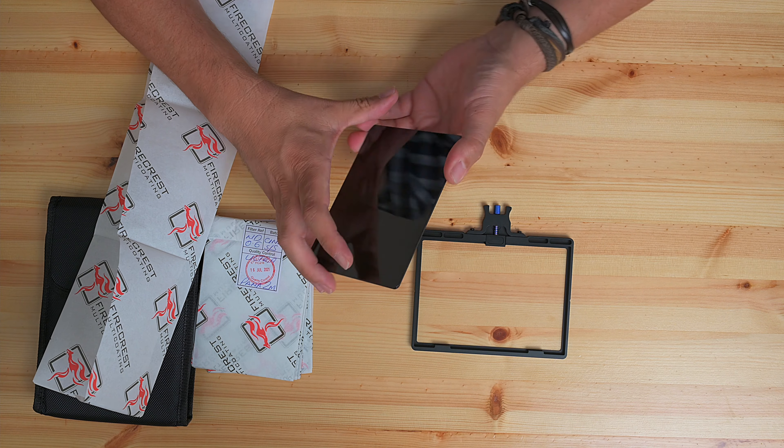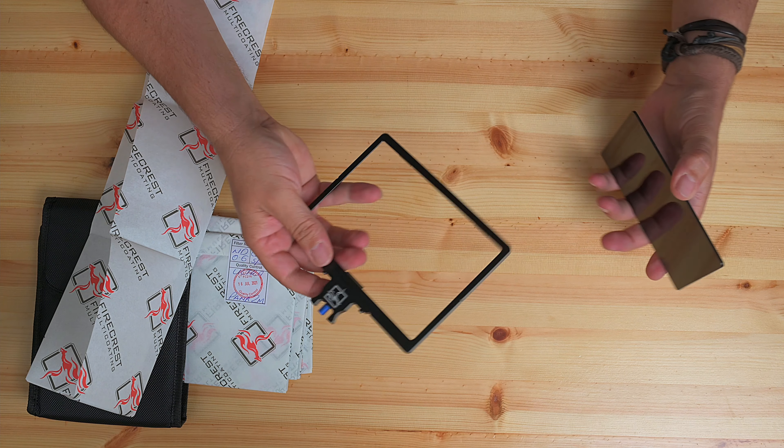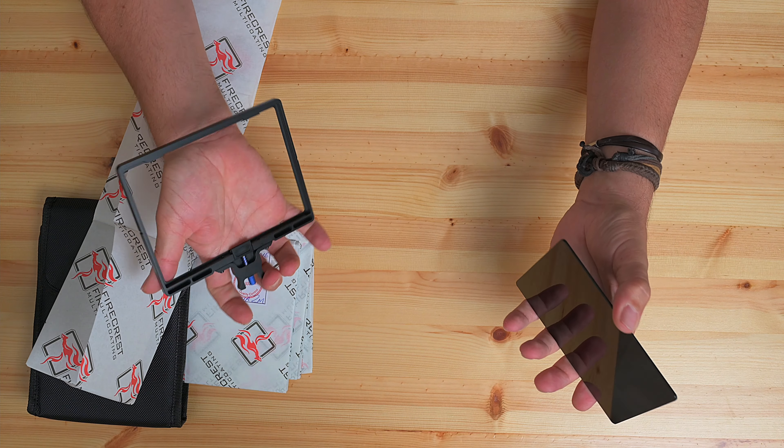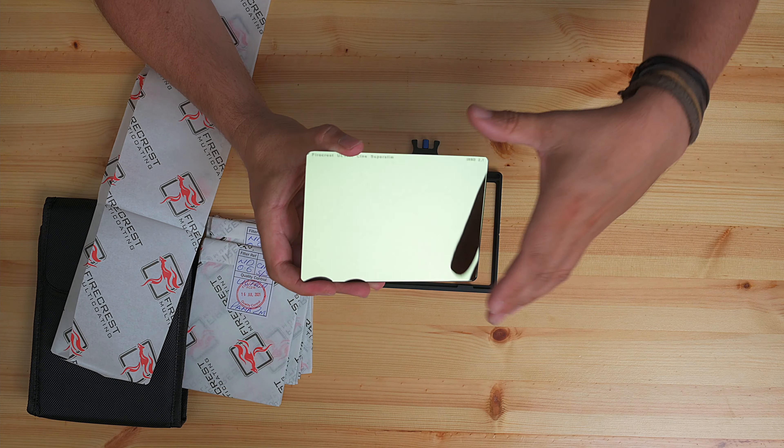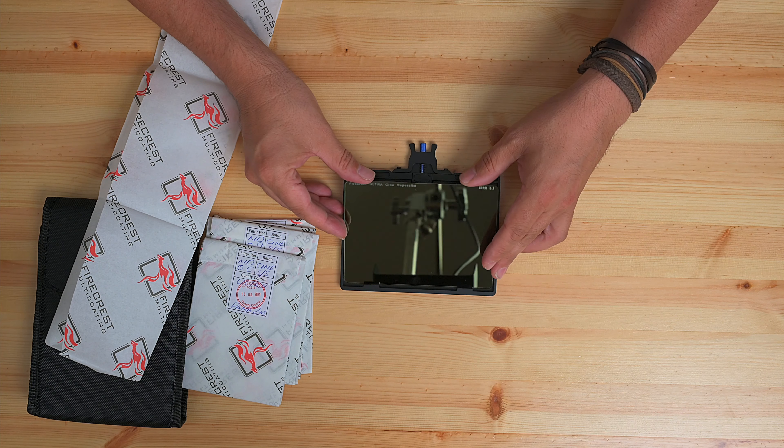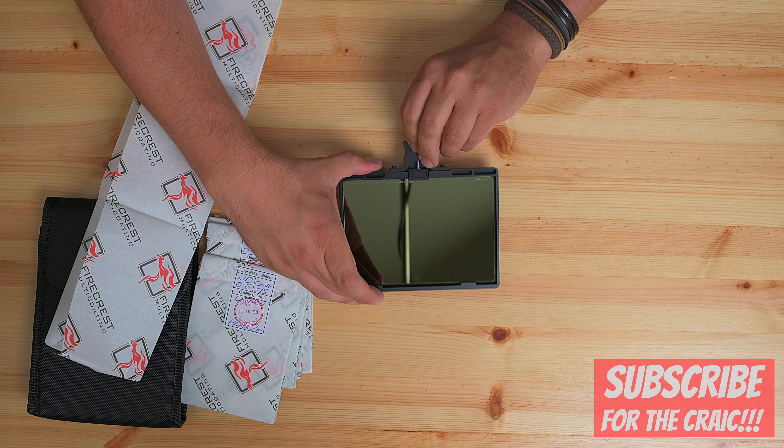This is the 2.1 ND Firecrest. To fit the 2mm Super Slim filter into the 4mm tray adapter, simply slide it in the bottom first, pull back the blue tag above, and it simply clicks into place.